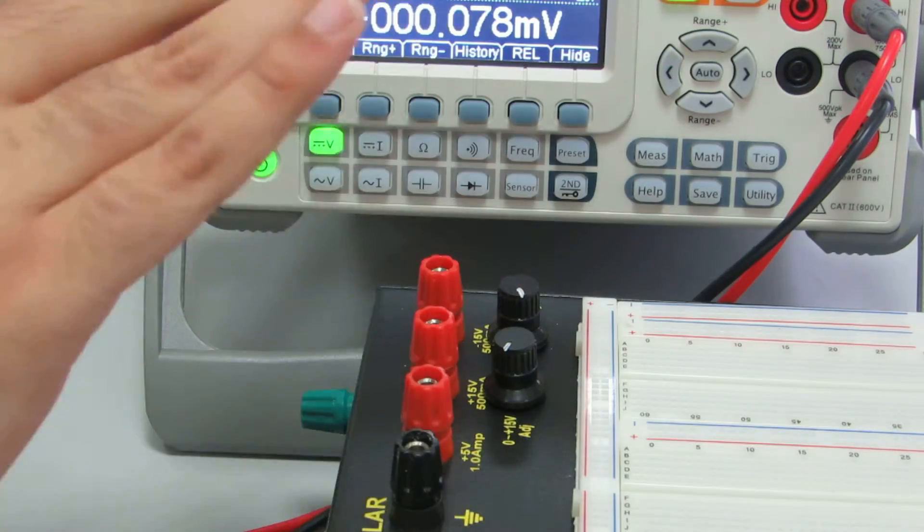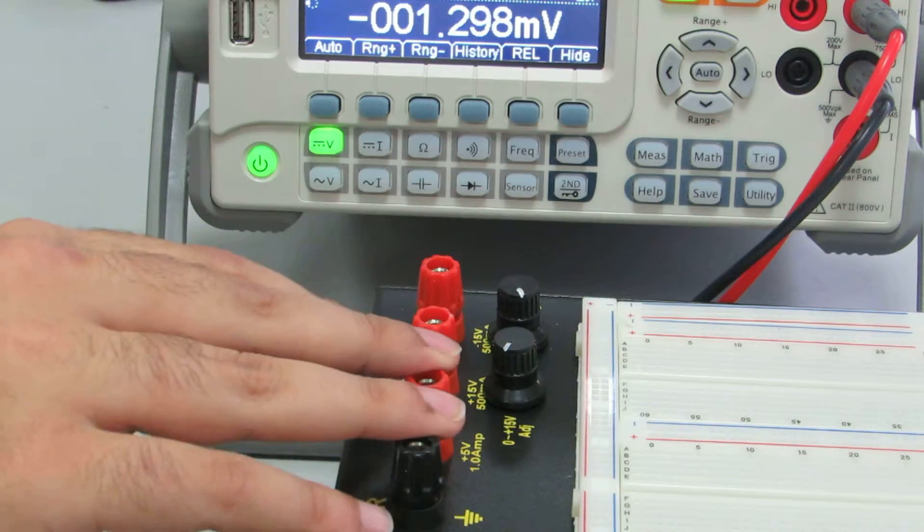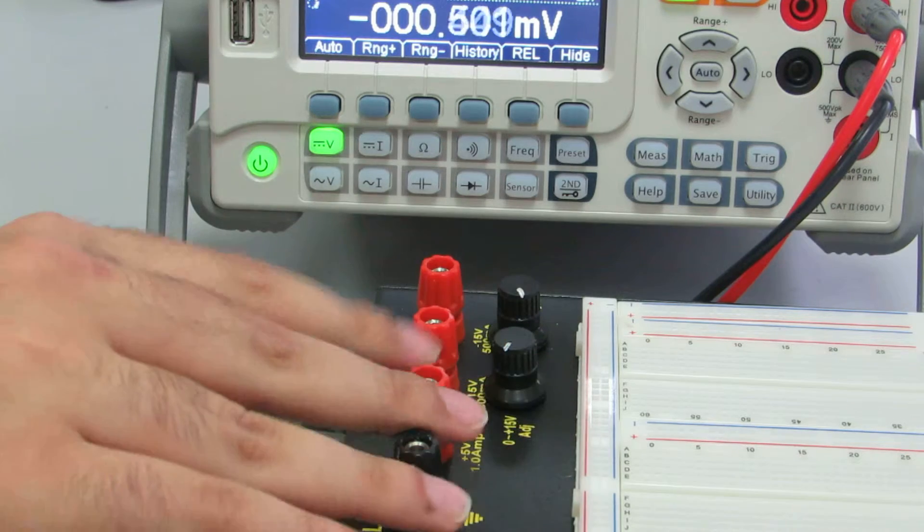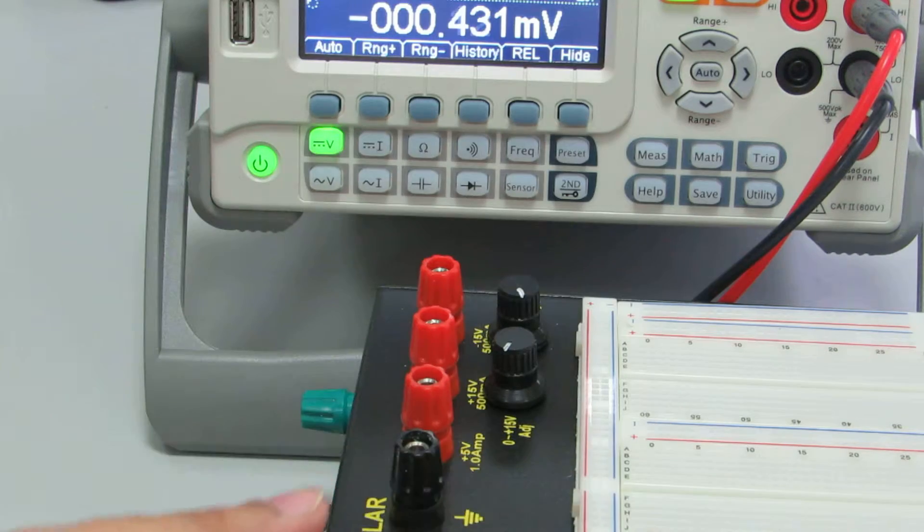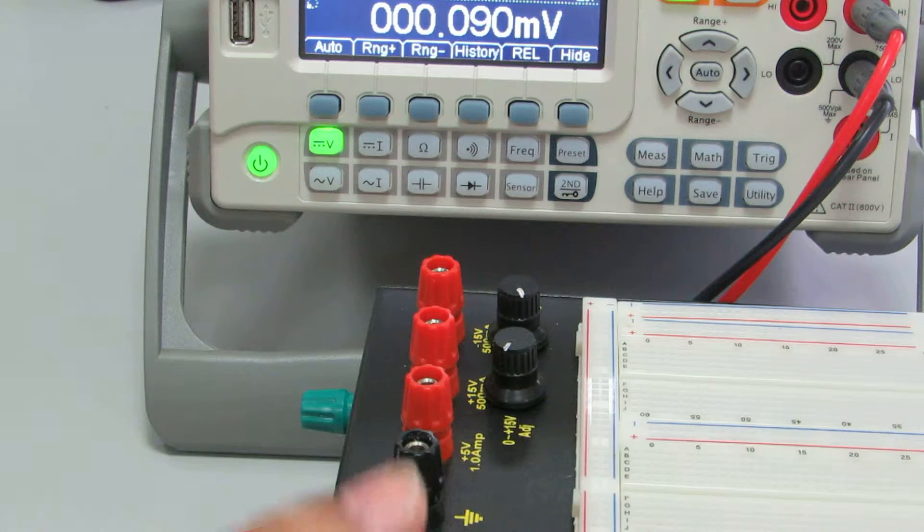One advantage I could think of over that one is that this is much smaller. You can take it on the go anywhere without the need to dismantle your circuit. That one is big and clunky and will be hard to move around.